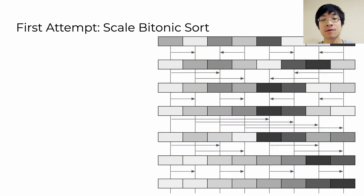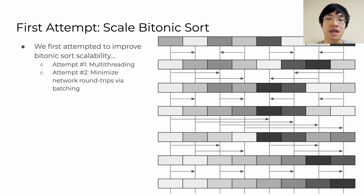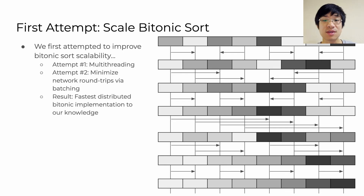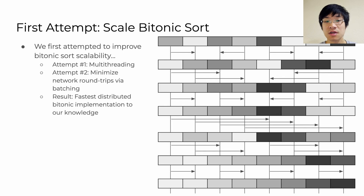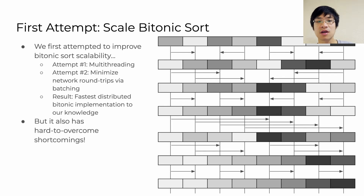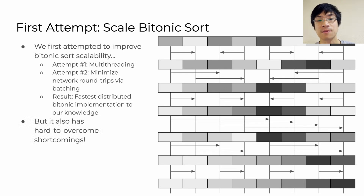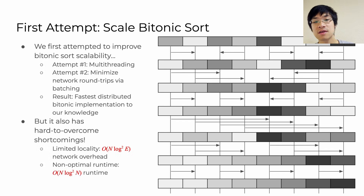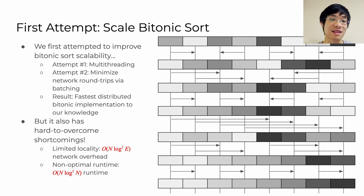Building on top of this, we applied multithreading optimizations and worked to mitigate the effect of network latency by batching swap requests made between enclaves. The end result was the fastest implementation of bitonic sort to our knowledge. But even with this, we found that the shortcomings of bitonic sort were simply too fundamental to overcome. It suffers from limited spatial locality and thus too much network communication across enclaves, and it simply has this non-optimal O(n log² n) runtime to begin with.